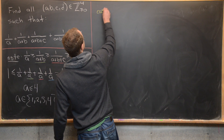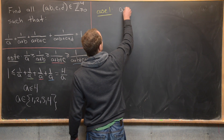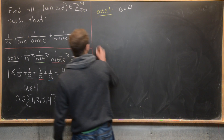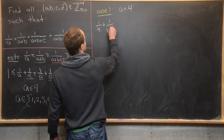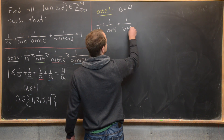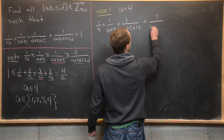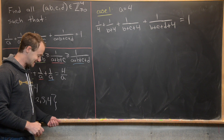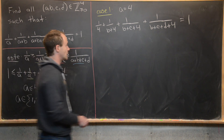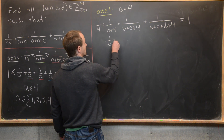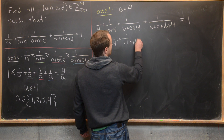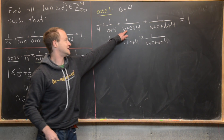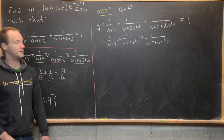Case 1: A = 4. Plugging A = 4 into the original equation gives: 1/4 + 1/(B+4) + 1/(B+C+4) + 1/(B+C+D+4) = 1. We play the same inequality game: 1/(B+4) ≥ 1/(B+C+4) ≥ 1/(B+C+D+4), so we replace the last two terms with 1/(B+4).